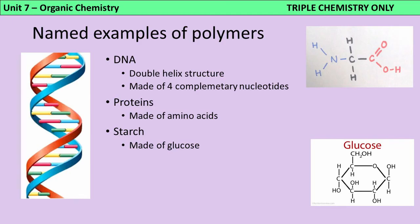There are some named examples of polymers that you might have come across, so there's DNA, which you obviously know from biology, so you should know it has a double helix structure and that it's made of four complementary nucleotides. We've just talked about proteins, which are polymers of amino acids, and also you should know from biology about starch, which is a polymer made of glucose.